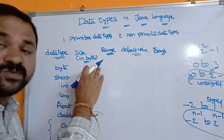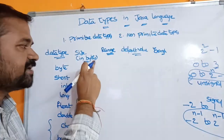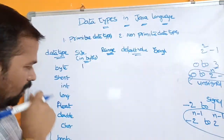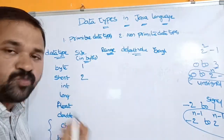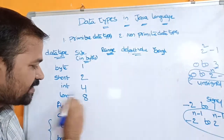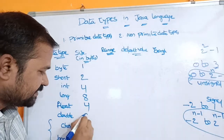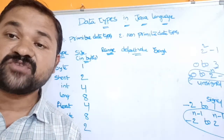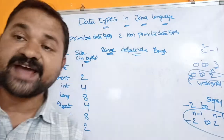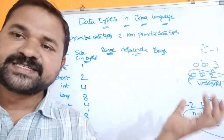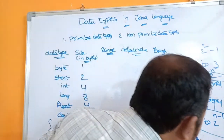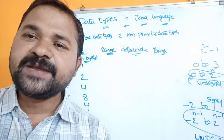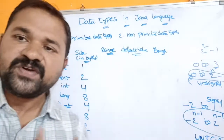Now let us write the sizes in terms of bytes. The size of byte is 1 byte (1 byte = 8 bits, so n = 8). The size of short is 2 bytes. The size of integer is 4 bytes. The size of long is 8 bytes. The size of float is 4 bytes. The size of double is 8 bytes. The size of char is 2 bytes. In C language the size of char is 1 byte, whereas in Java it is 2 bytes.